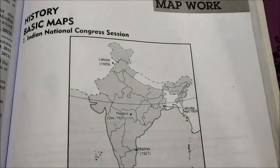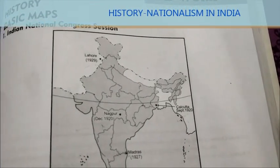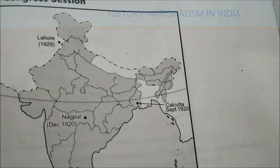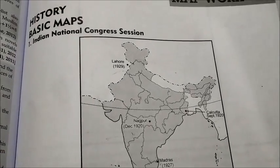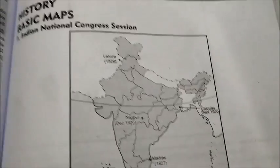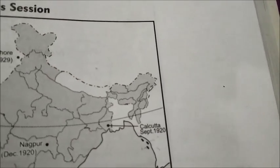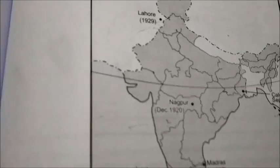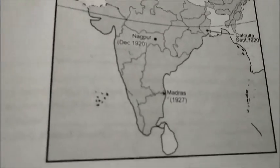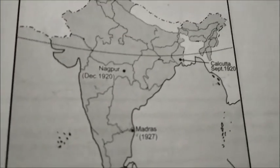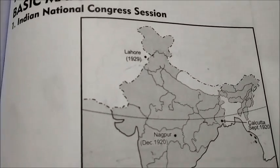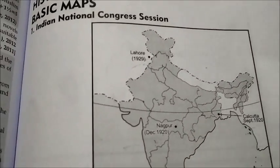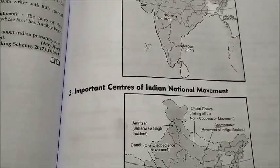Firstly, let's look at the map work for the history chapter on Nationalism in India. Very few places to mark here. Firstly, you must remember the Indian National Congress sessions — the main ones after Gandhiji came to India from South Africa. Starting with Calcutta in September 1920, then Nagpur in Maharashtra in December 1920, then Madras in 1927, and of course Lahore — in current Pakistan, but at that time in India — in 1929.